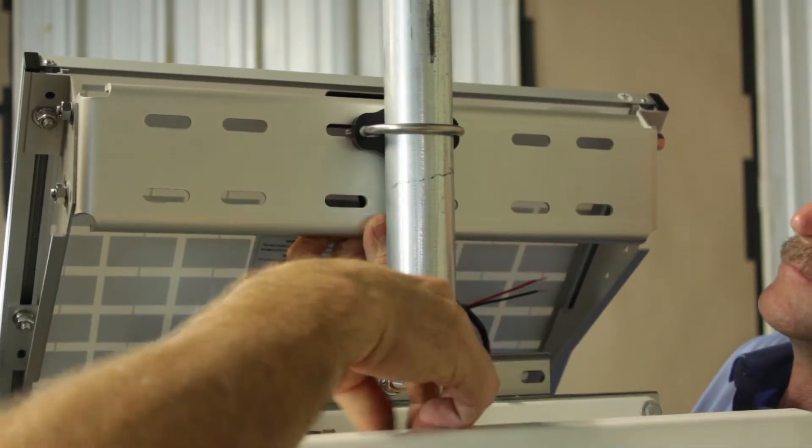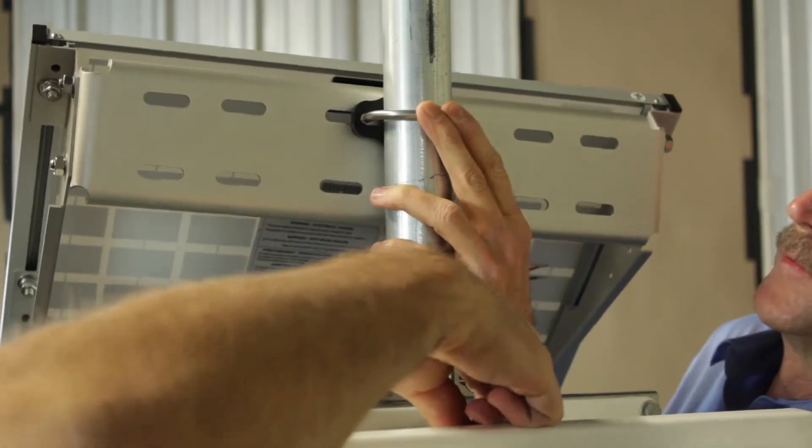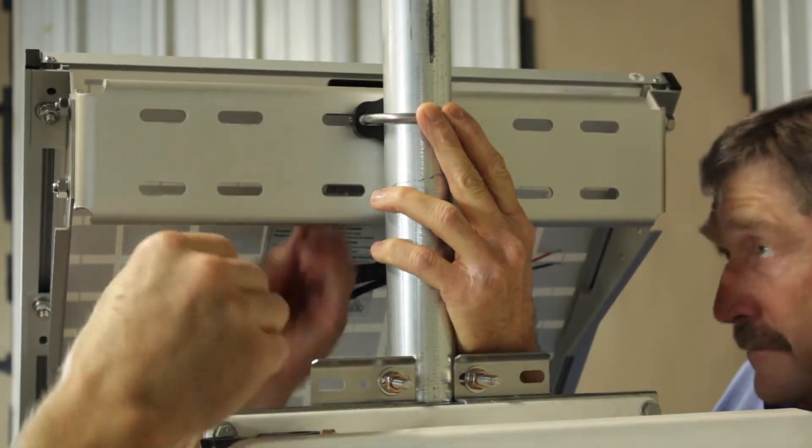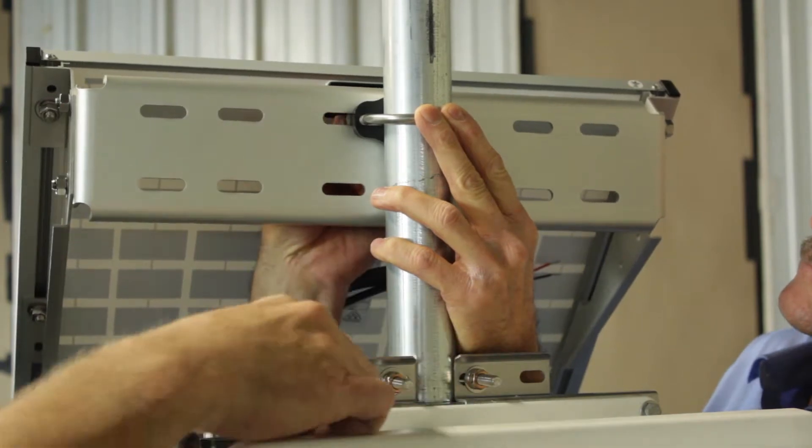Place the U-bolt over the mast, then through the spacer into the solar panel mount. Place a flat washer, lock washer, and nut over each end of the U-bolt.